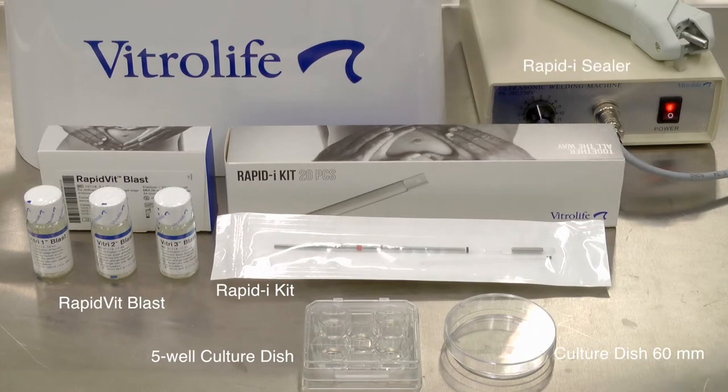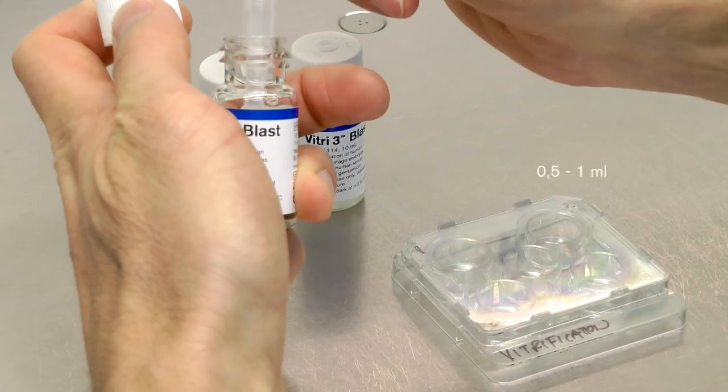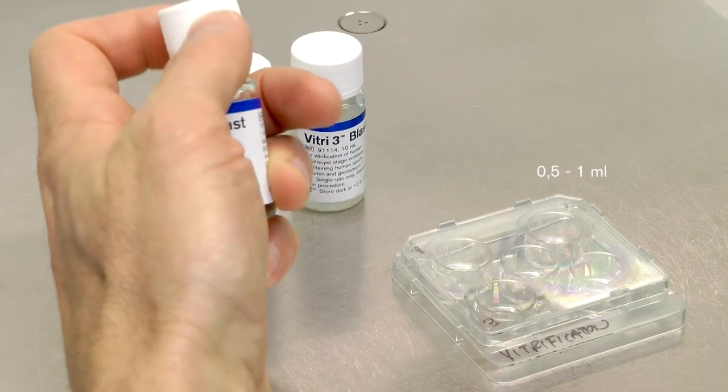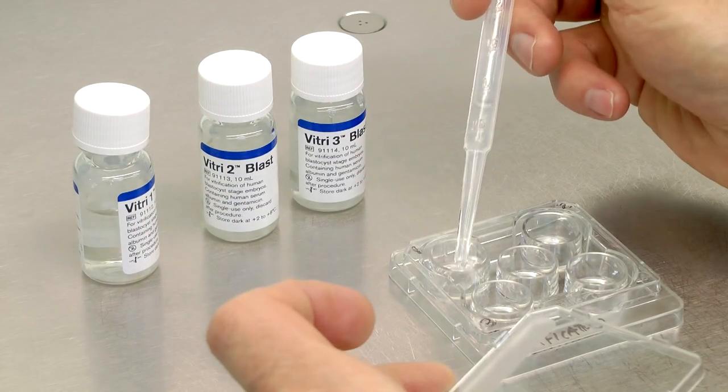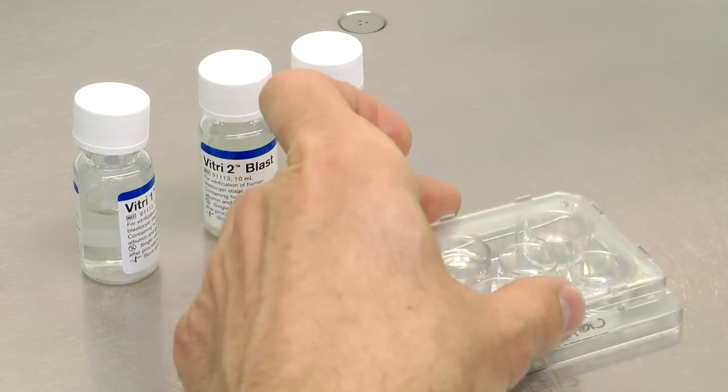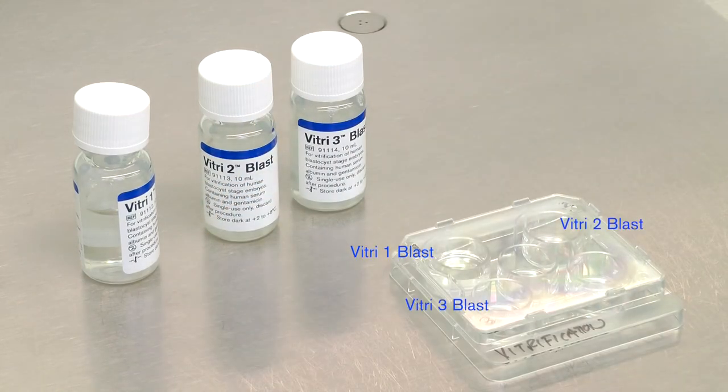The ultrasonic RapidEye sealer and the smart box containing liquid nitrogen. Place between 0.5 and 1 ml of each of the vitrification solutions in separate wells of the 5-well dish. Place the lid on and heat to 37 degrees Celsius. Do not heat the vitrification solutions in a CO2 incubator.